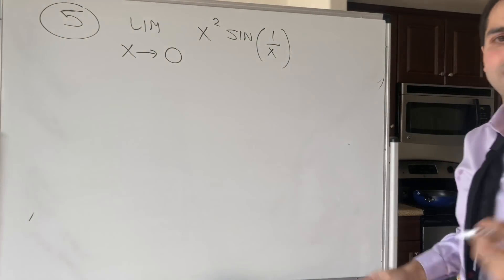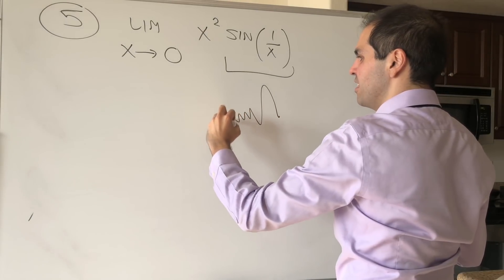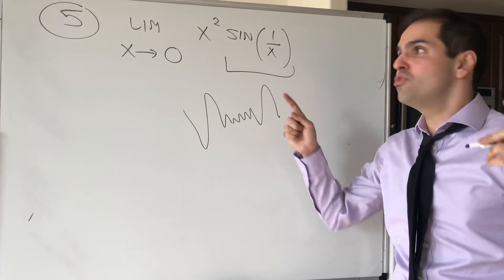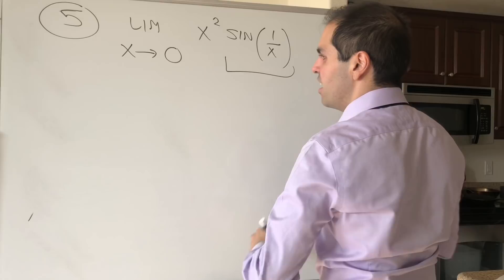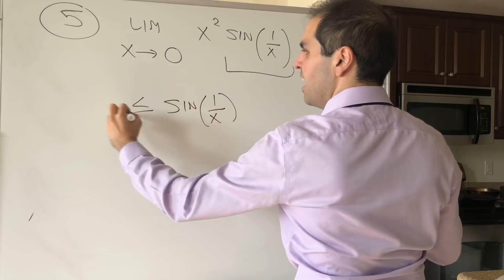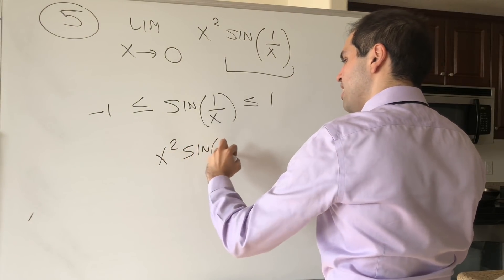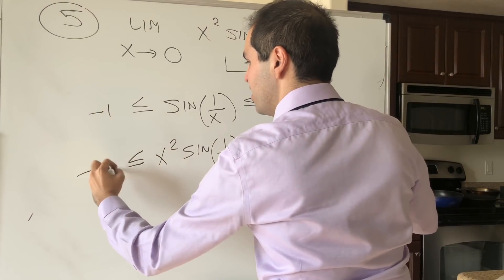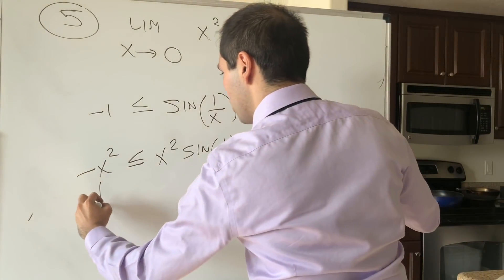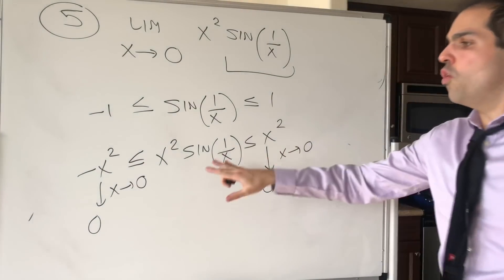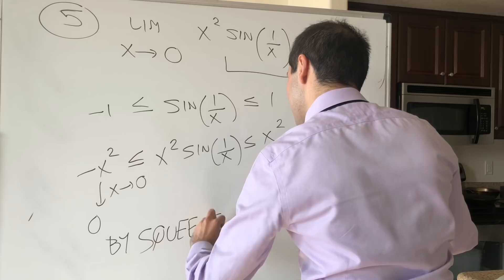Next: limit x→0 of x²·sin(1/x). Because you see a sine function — a squiggly thing — it's usually the squeeze theorem. Start with −1 ≤ sin(1/x) ≤ 1, then multiply by x²: −x² ≤ x²·sin(1/x) ≤ x². Both the upper and lower bounds go to 0 as x→0, so by the squeeze theorem, the answer is 0.